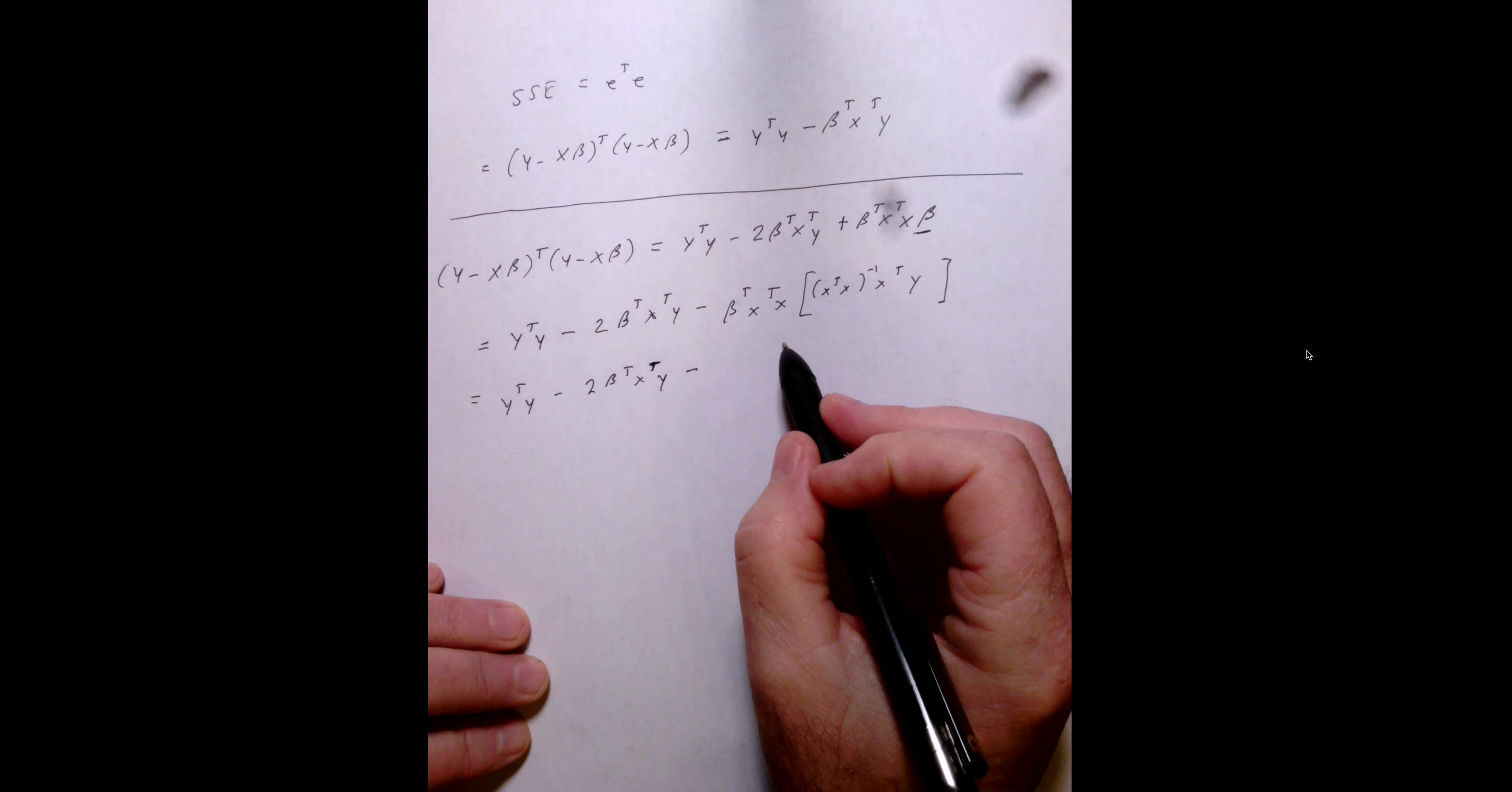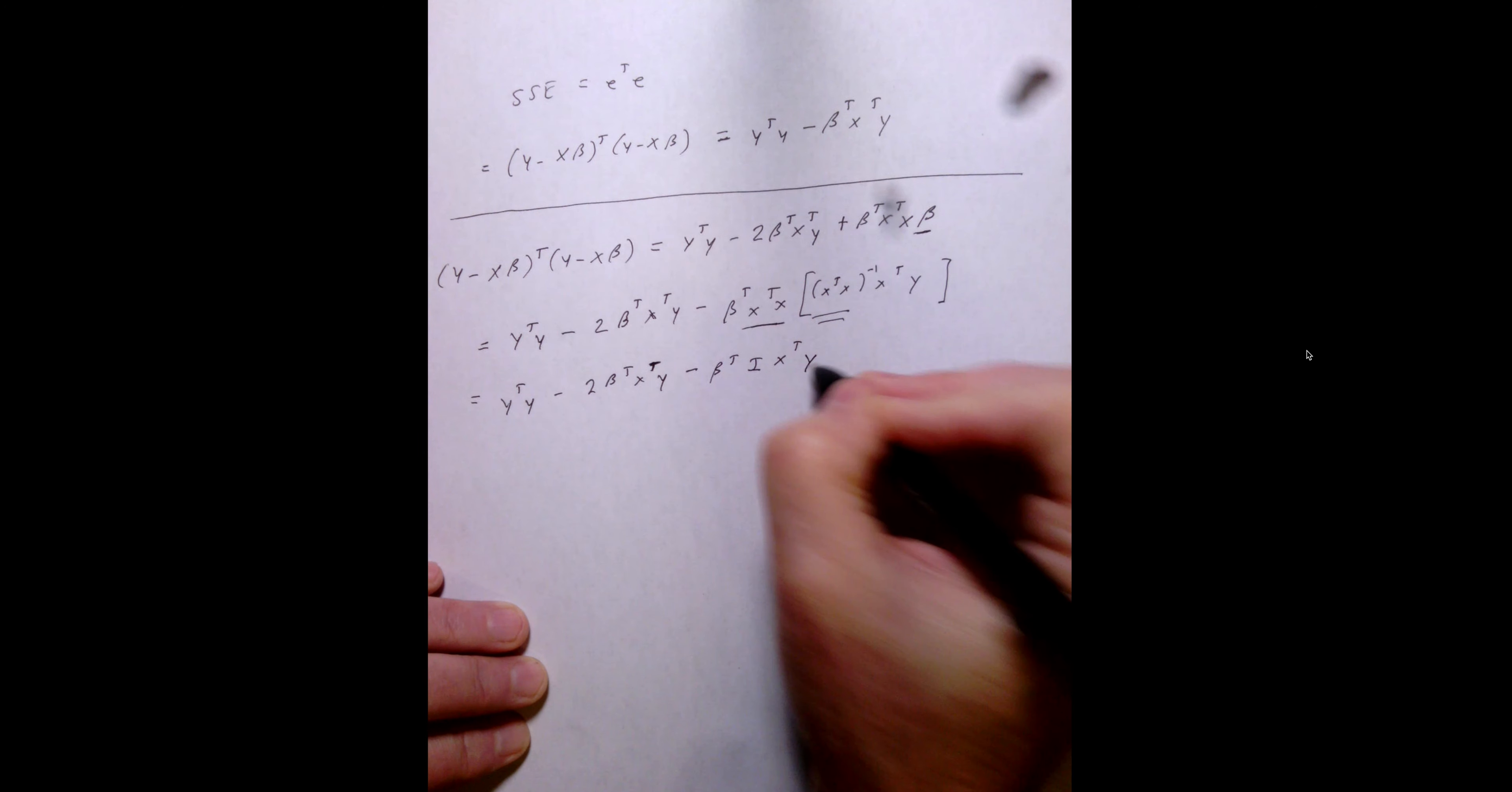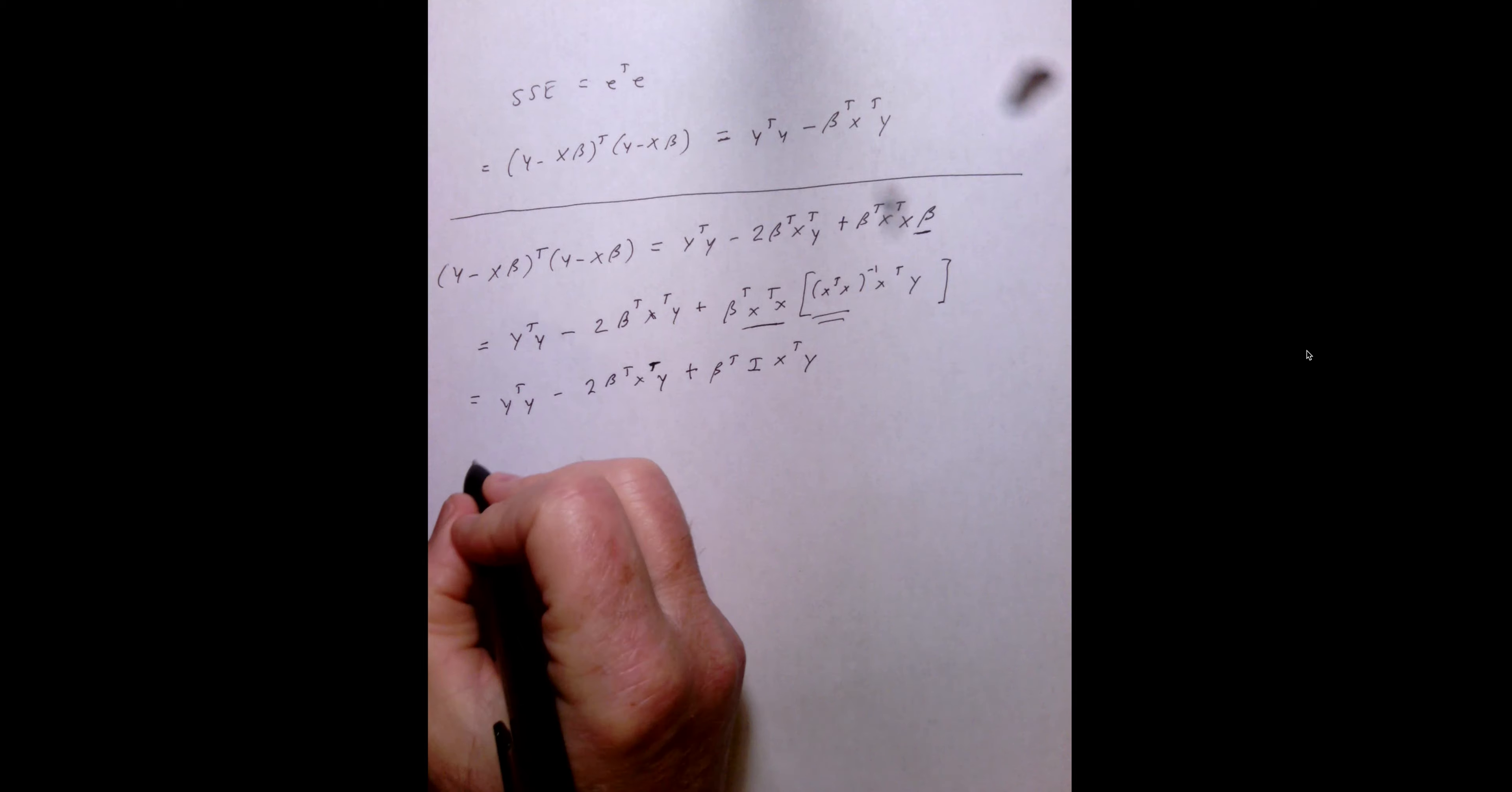Now, what I see here is I see that this part right here and this part right here... So, I have x transpose x times x transpose x inverse. So, this is just going to be the identity matrix times x transpose y. I have no earthly idea why this magically just changed to a negative. So, it's the magic negative insert by your bozo professor.